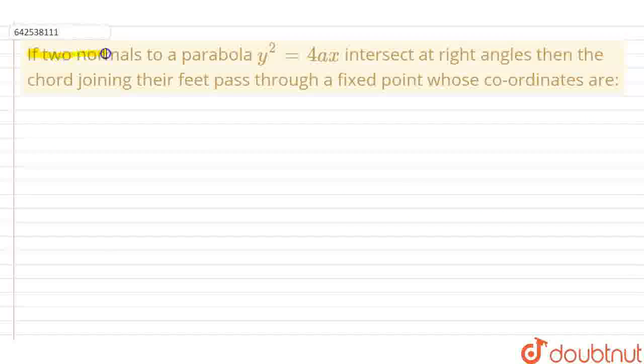So, today's question is, if two normals to the parabola y² equals 4ax intersect at right angles, then the chord joining their feet pass through a fixed point whose coordinates are.